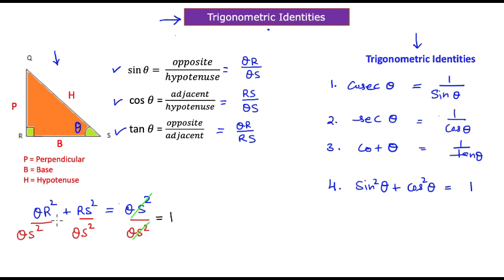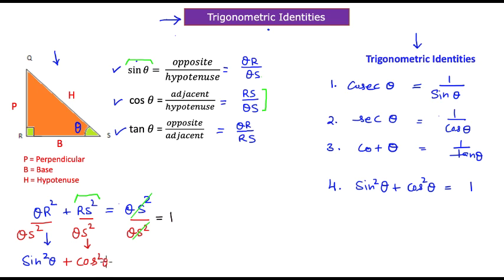On the left hand side, the values in terms of sine and cos: sine theta is QR divided by QS, so QR²/QS² becomes sine²θ. The second term, RS divided by QS, is cos theta, so RS²/QS² becomes cos²θ. Therefore sine²θ plus cos²θ equals one — our fourth identity is proved.